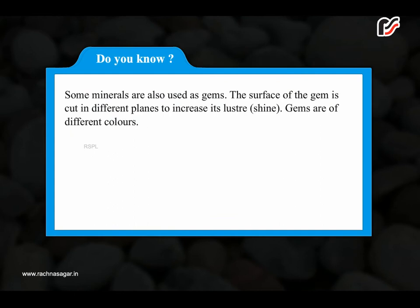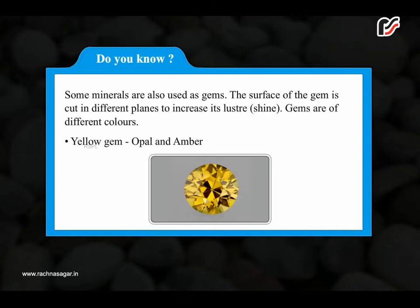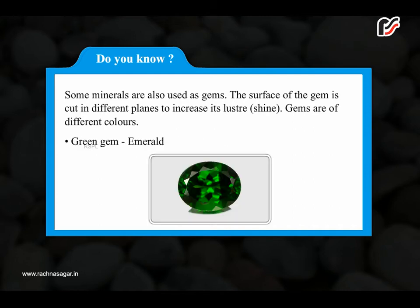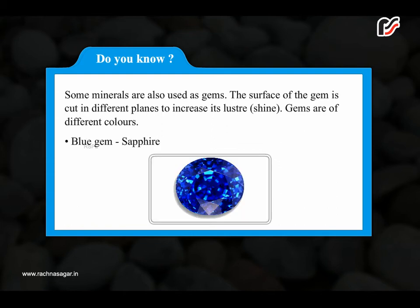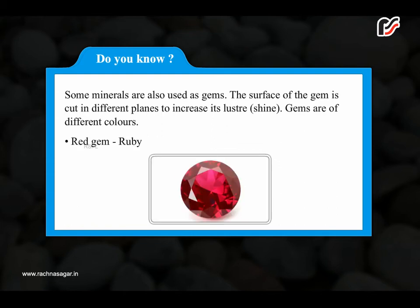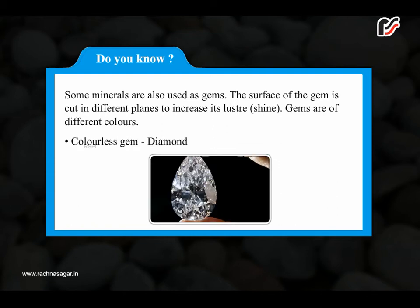Do you know? Some minerals are also used as gems. The surface of the gem is cut in different planes to increase its luster and shine. Gems are of different colors: yellow gems include opal and amber; green gem is emerald; blue gem is sapphire; red gem is ruby; and colorless gem is diamond.